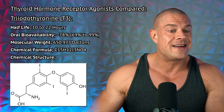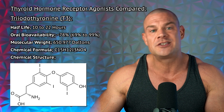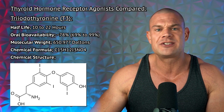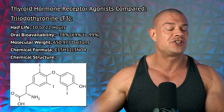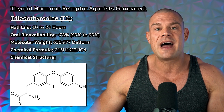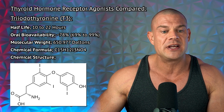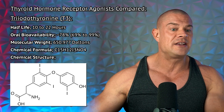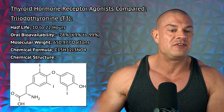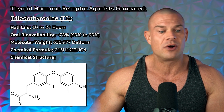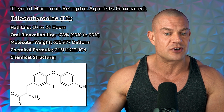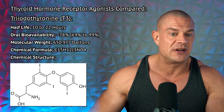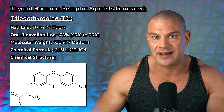Let's quickly compare sobiturome GC1 to triiodothyronine T3 and see how they differ. The half-life of T3 is anywhere between 10 to 22 hours — there's a lot of scientific evidence available on T3, which is why there's such a range. The oral bioavailability of T3 averages approximately 78%, but the range is anywhere between 69 to 99% depending on the scientific evidence you read. The molecular weight is always the same: 650.977 Daltons. In the chemical formula and structure of T3, it contains not only carbon and hydrogen, but also iodine and nitrogen.